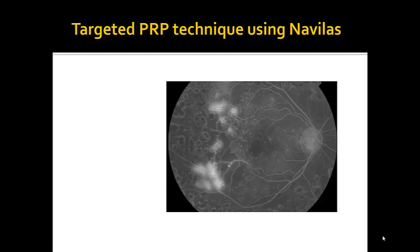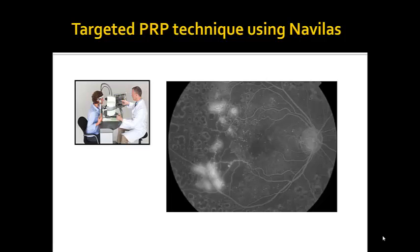TRP Panretinal Photocoagulation Strategies require physicians to use a previously acquired fluorescein angiogram offline for treatment planning and guidance, as well as intraoperative manual laser spot positioning on a slit lamp with an inverted fundus image or indirect ophthalmoscope, all in an attempt to target areas of non-perfusion for photocoagulation.